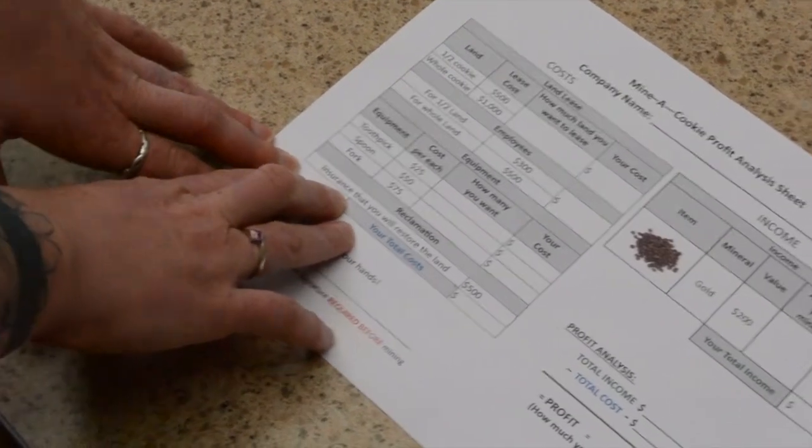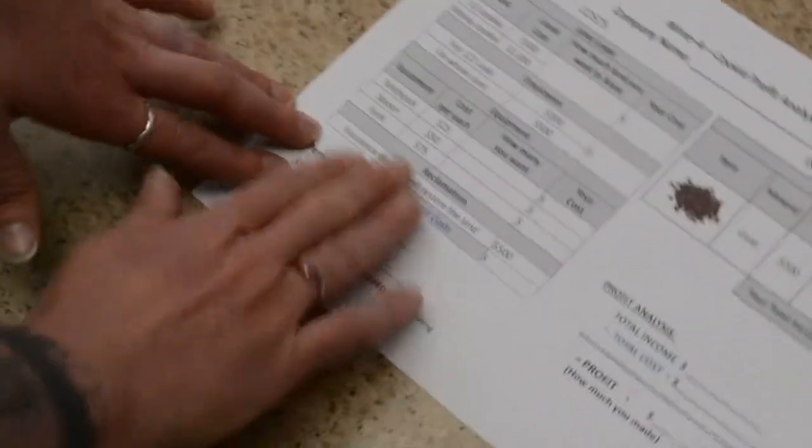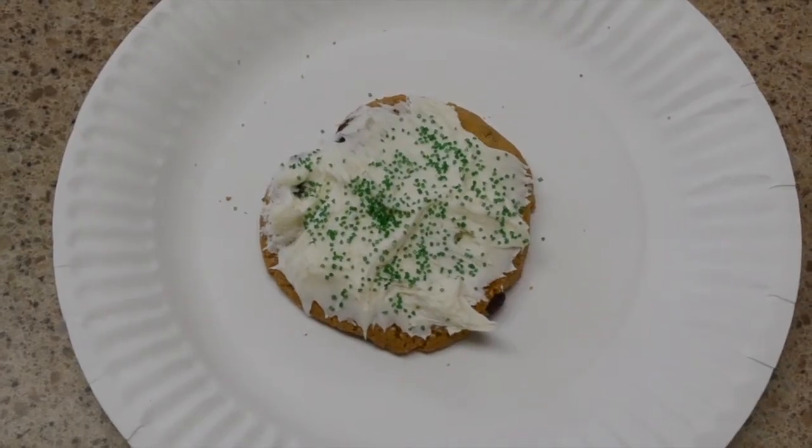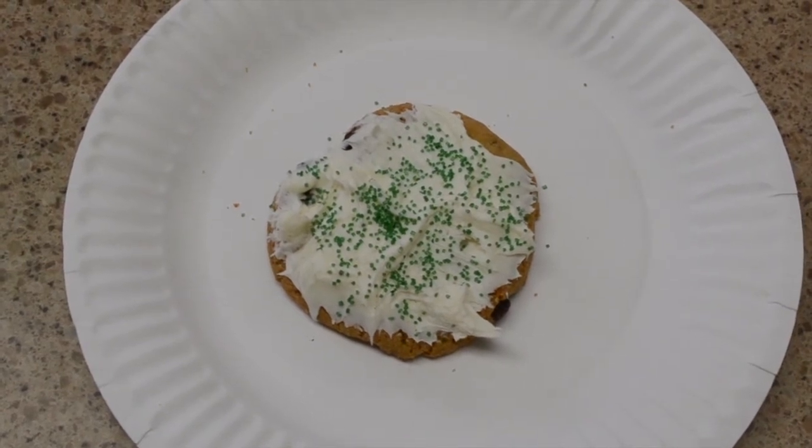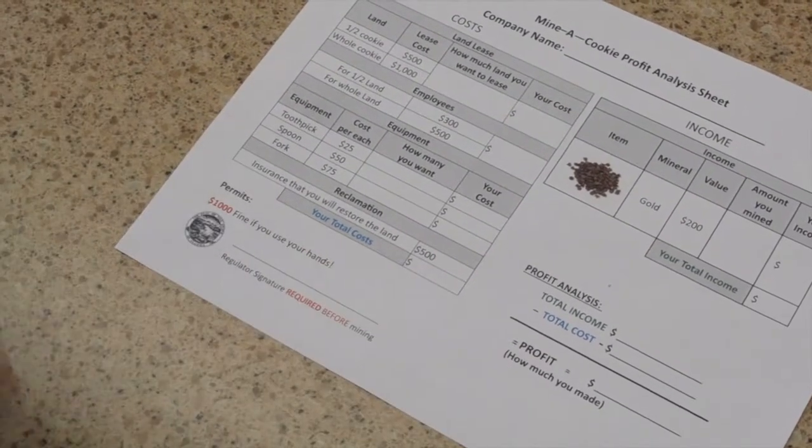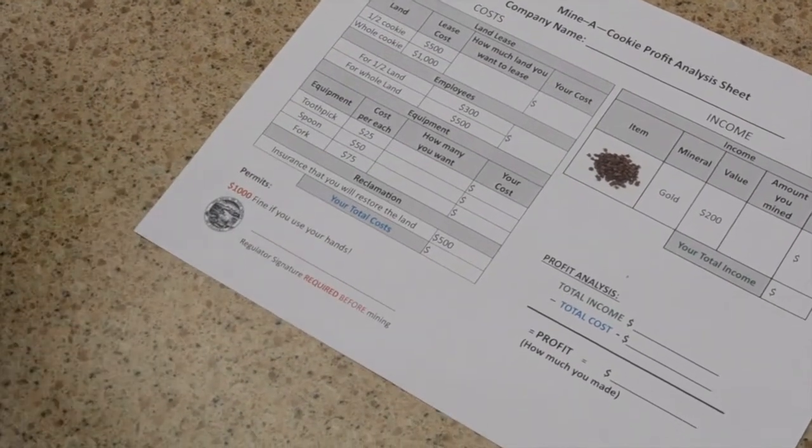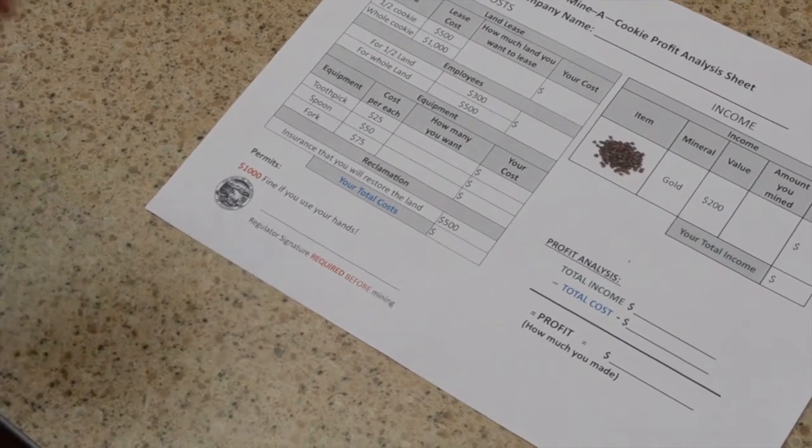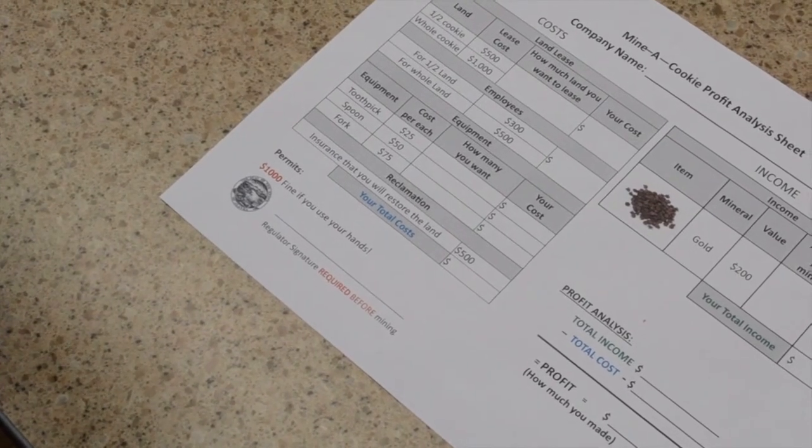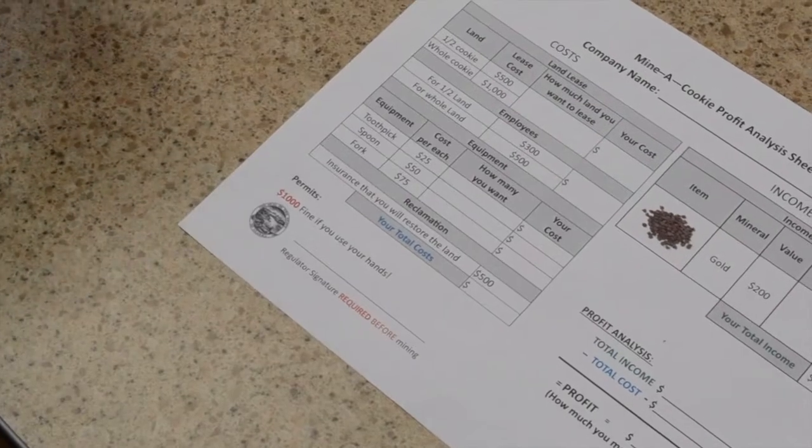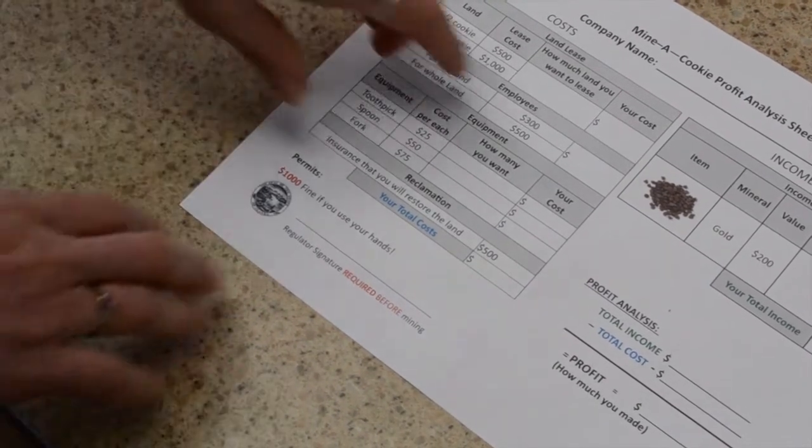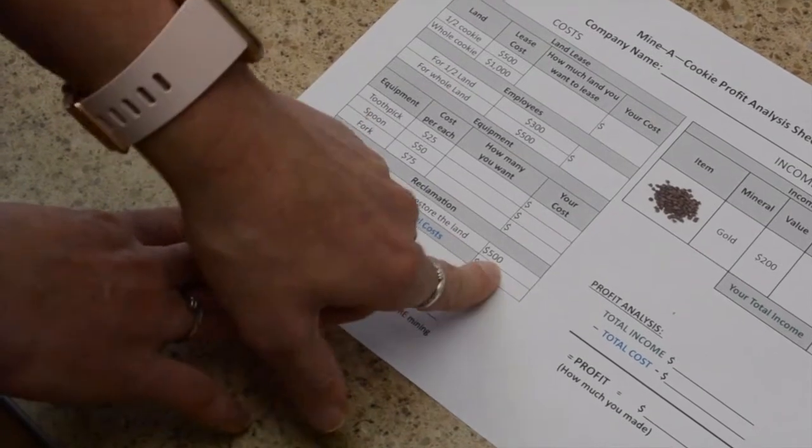And then the last thing they need before they can start mining is a reclamation bond. This is a real thing that real mining companies have to do to ensure that they're putting the land back together when they're done. We really want to drive home the fact that mining companies cannot just go out and go mining and dig holes in the land and then leave once they get their gold. They actually have to put the land back. And this is basically an insurance policy making sure they do a good job. So once the students get in and get mining, they're going to have to remove the frosting and the sprinkles, dig out their chocolate chips, and then they actually have to put their cookie back together and try to get that frosting and those sprinkles back on top. If they do a good job, they get this $500 back. If they do a bad job, then the bank would keep that money and be able to pay somebody to go out and do a better job. Then they would add up all of these costs to get their total cost of how much money they need to borrow.